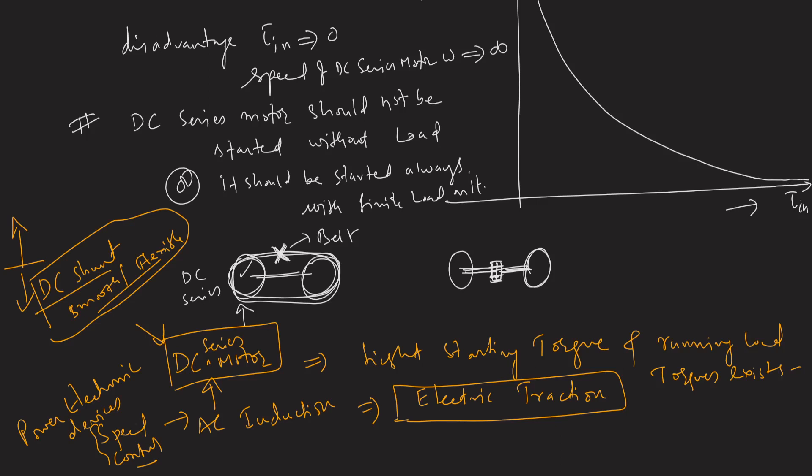Armature voltage control varies the speed only below rated speed, not above it. In a DC shunt motor, very smooth and flexible speed control both above and below rated speed is achievable. In contrast, for the DC series motor only one method is available, and present-day AC induction machines have effectively replaced DC series motors due to their rugged construction and improved speed control via power electronics.